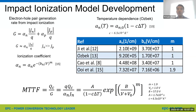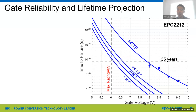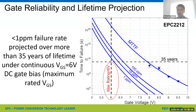This slide shows how we model the impact ionization process. Following a peer-reviewed publication, by combining various equations we yielded our final expression for the mean time to fail responsible for gate failure. The impact ionization model is plotted against measured data points for EPC-2212, where a good fit is found. If we keep the gate bias at 6 volt — the VGS max — we project less than 1 ppm failure rate over 35 years of lifetime under continuous DC bias. This projection is also consistent with our field experience.